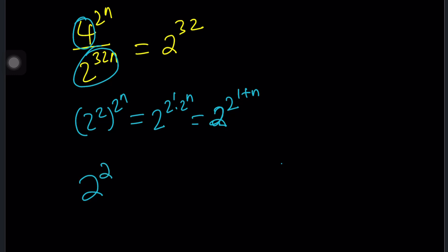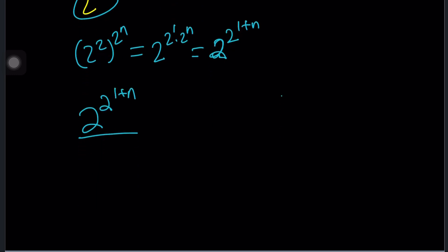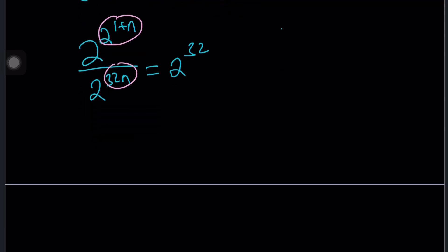2 to the power 2 to the power 1 plus n divided by 2 to the power 32n equals 2 to the power 32. Now everything is a power of 2. Don't you love that? It's beautiful. Now we can go ahead and use the properties of exponents. We're supposed to subtract these exponents. 2 to the power 1 plus n is the exponent.